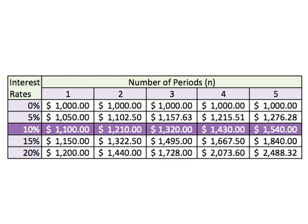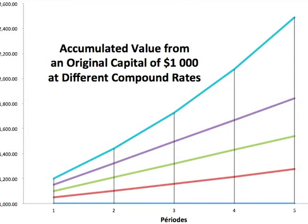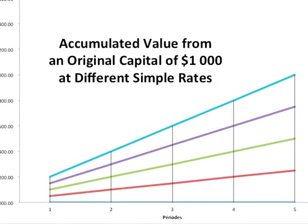if I invest or borrow $1,000 at 10% for 5 years, my interest in the second year will be calculated on the amount obtained at the end of the first year, namely $1,100, and so on and so forth. After 5 years, my accumulated value will be $1,540 instead of $1,500.